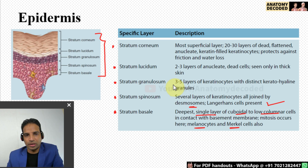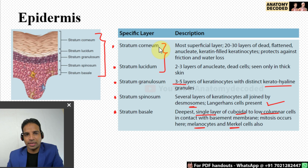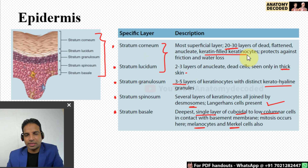Stratum granulosum consists of 3 to 5 layers containing keratohyaline granules. Stratum lucidum and stratum corneum do not have a nucleus — from stratum granulosum downward there is a nucleus, and above that there is none. Stratum lucidum is seen only in thick skin. Stratum corneum is the most superficial layer, consisting of flattened anucleate keratin-filled keratinocytes, providing protection against friction and water loss.